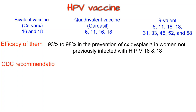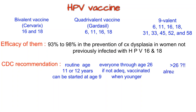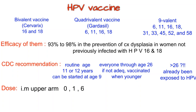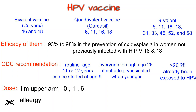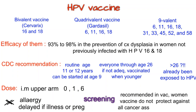CDC recommendations: HPV vaccine is recommended for routine vaccination at age 11 or 12 years; vaccination can be started at age 9. Vaccination for everyone through age 26 if not adequately vaccinated when younger. Vaccination is not recommended for everyone older than 26 years, because people in this age range have already been exposed to HPV. The vaccine is administered IM in the upper arm on a three-dose schedule: 0, 1, and 6 months. Vaccine is not given in cases of allergy and is delayed if illness or pregnancy is present. Screening is still recommended in vaccinated women because the vaccine does not protect against all cancer-associated HPV types and the duration of immunity is not yet known.